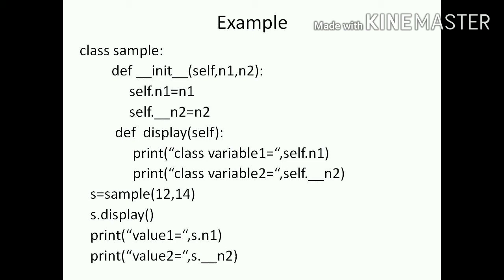Inside the display method, the instruction prints class variable 1, which is self.n1. The value displayed is 12. In the next line, class variable 2 is self.__n2, and the value 14 is displayed.